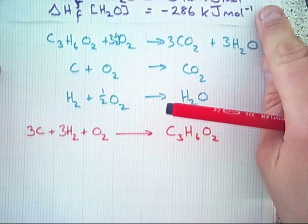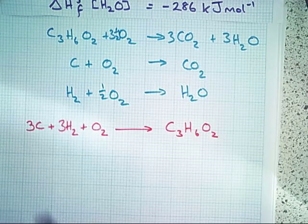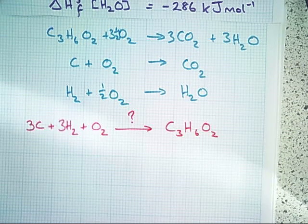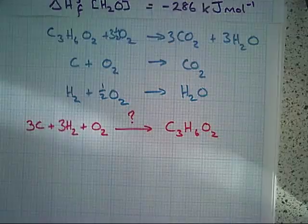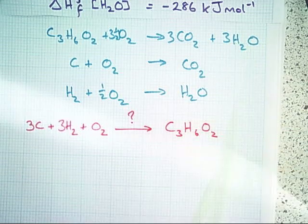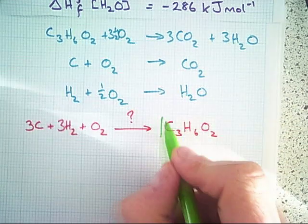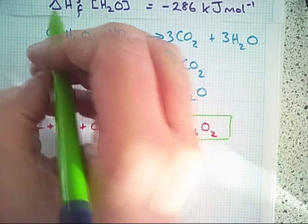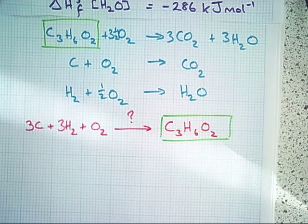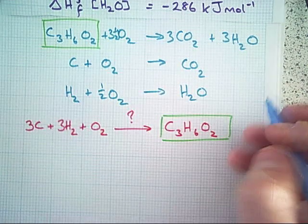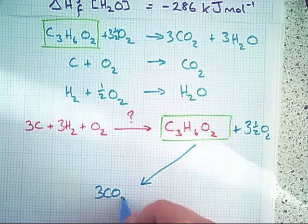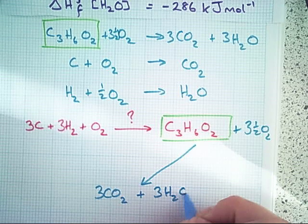Let's look at combining the equation we've just written — the enthalpy change of formation we're trying to find — with the data equations we actually have. Looking at our equations, we can identify that C3H6O2, propanoic acid, is present in the reactants in our enthalpy change of combustion equation. We can write this equation here and draw an arrow to make three CO2 molecules and three H2O molecules.